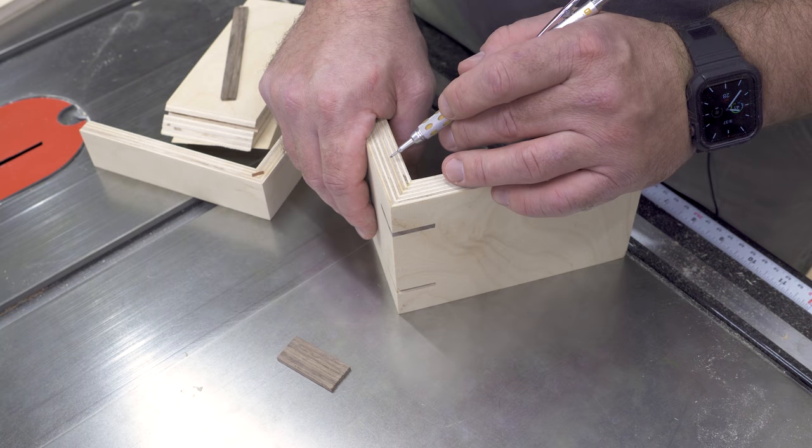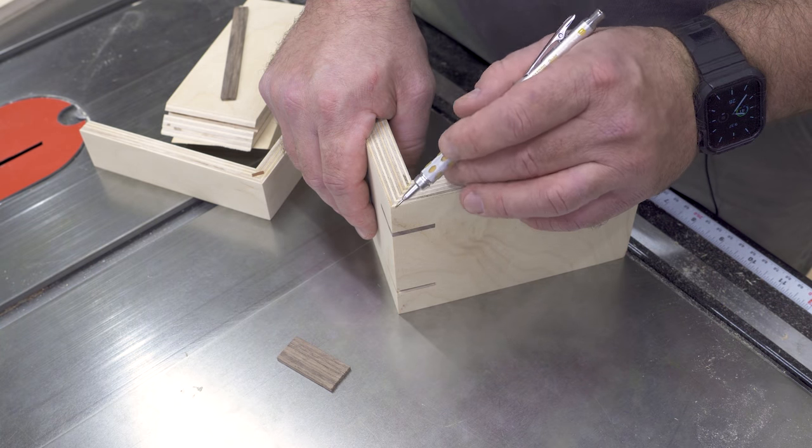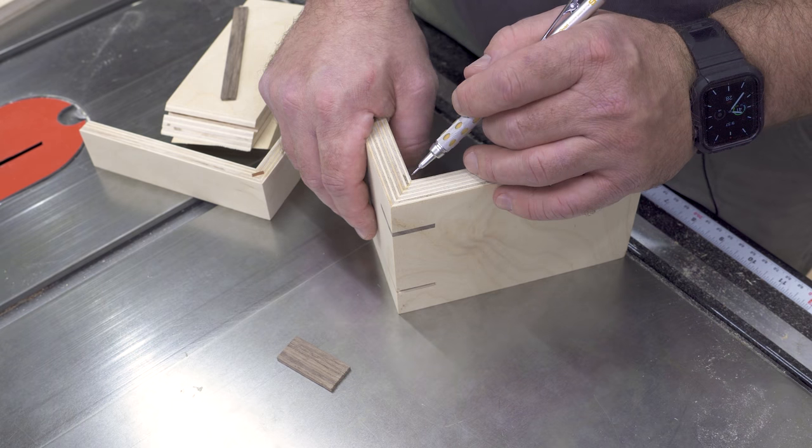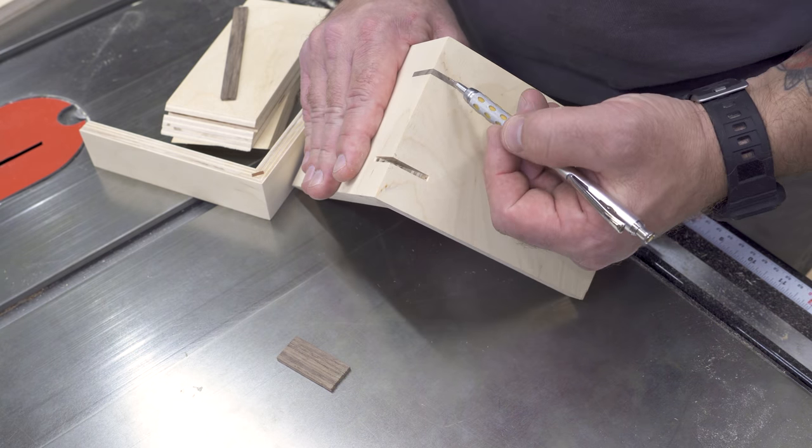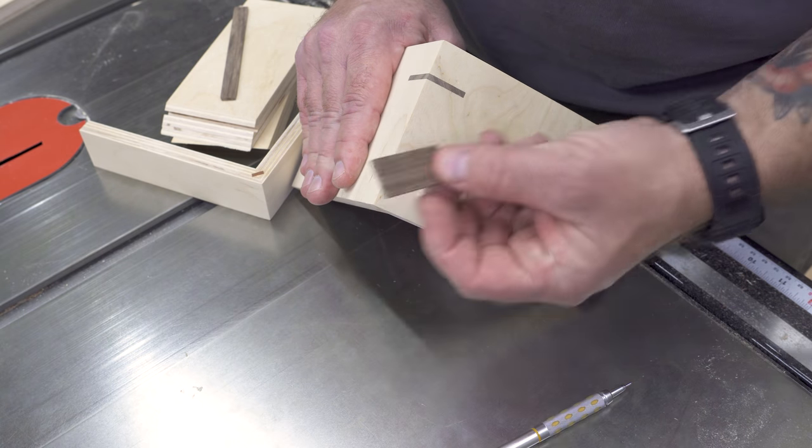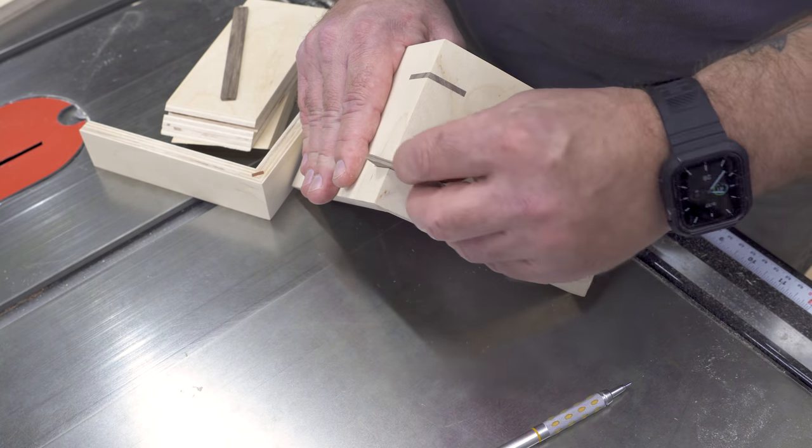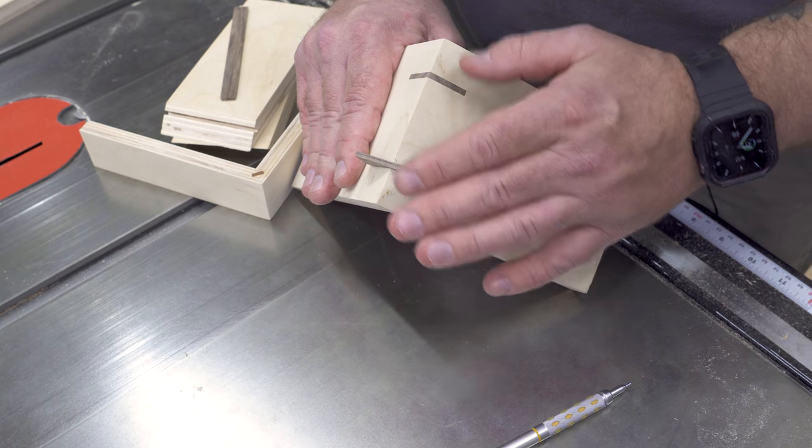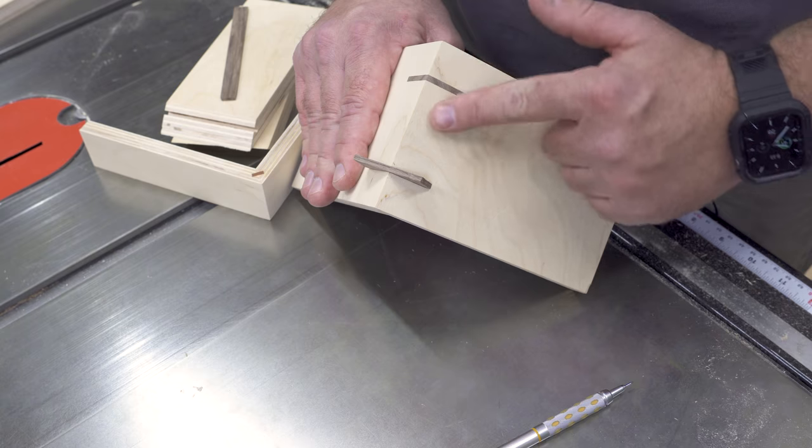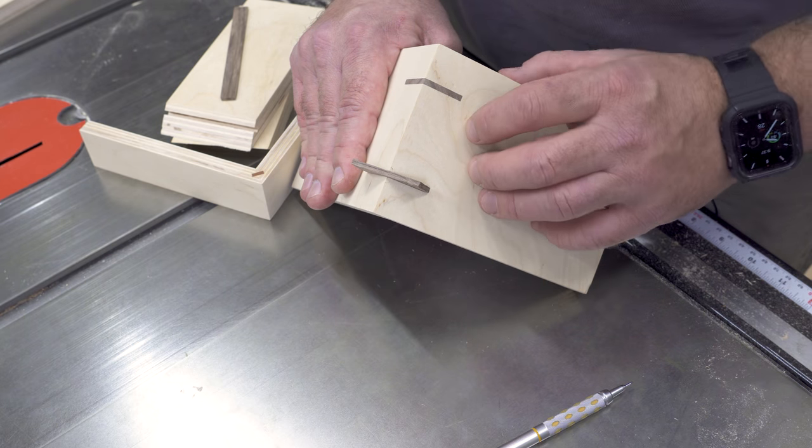A couple videos ago we talked about how a miter joint is not inherently strong with glue on its own and that usually we need some way of reinforcing that. In that video we did external splines. We cut a notch or a groove here, inserted a spline the same thickness as that notch. Once it's glued up we can cut that back, sand it down, and now we have a nice flushed up external spline that is strengthening our miter joint.